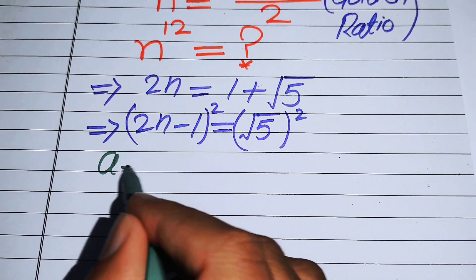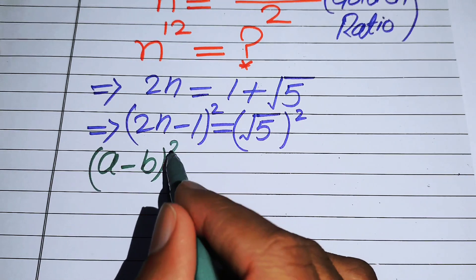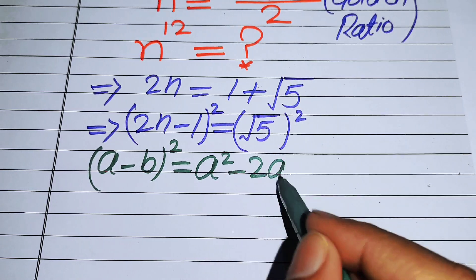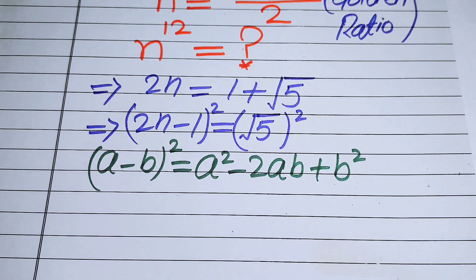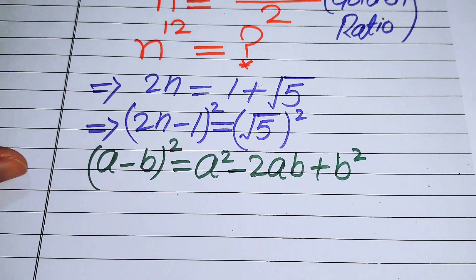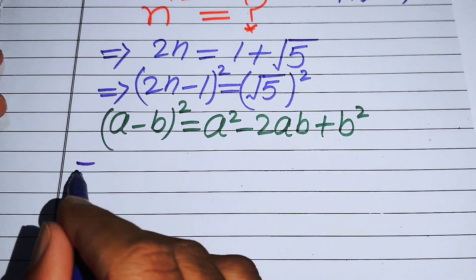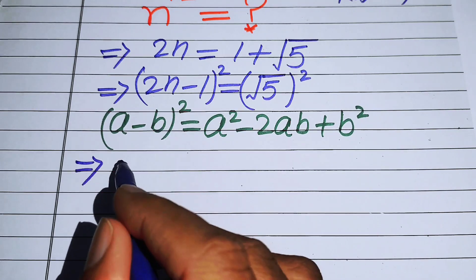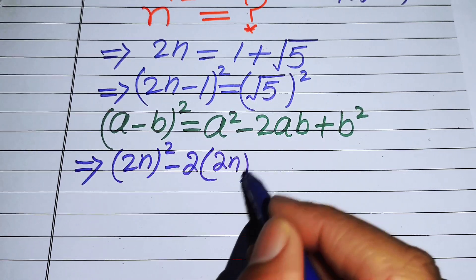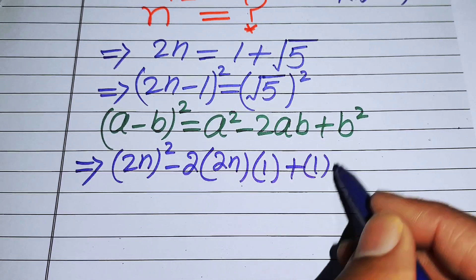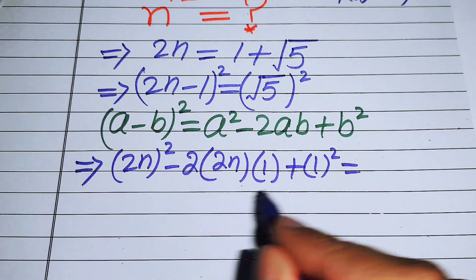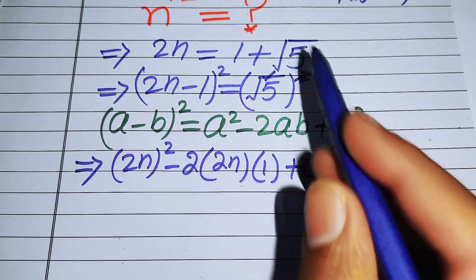We use the identity (a - b)² = a² - 2ab + b². Applying this to the left-hand side (2n - 1)², we get 4n² minus 2·(2n)·1 plus 1², which equals 4n² - 4n + 1.